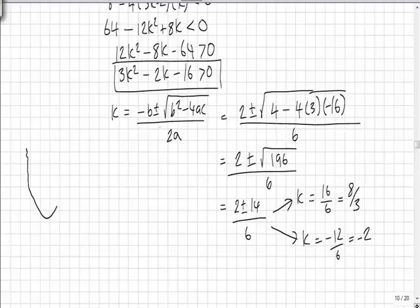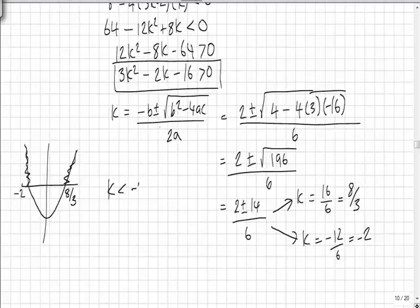And the range of values, well the quadratic we were given is actually positive and it cuts the x axis at minus 2 and 8 over 3. And we want all values greater than 0 which would be these parts here. So k can be less than minus 2 or greater than 8 over 3.